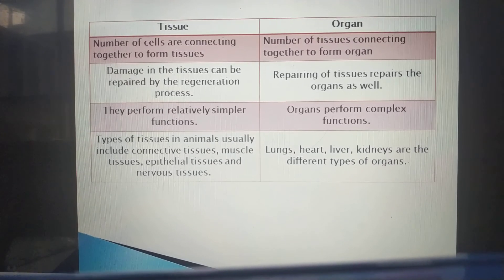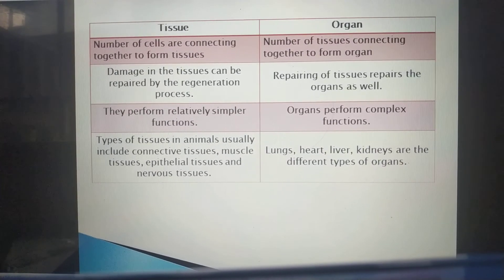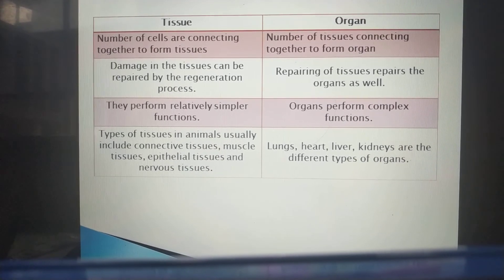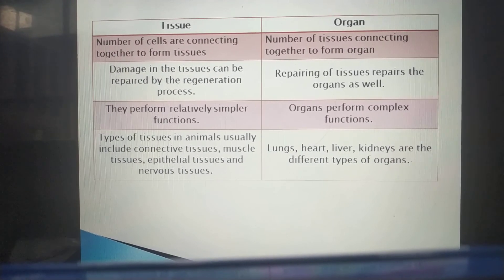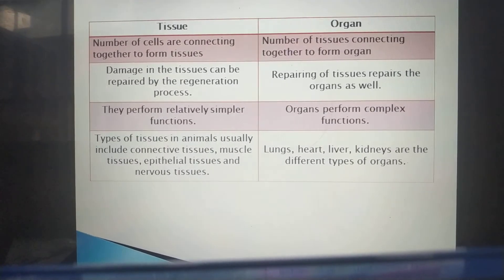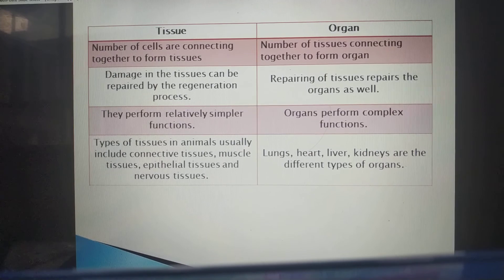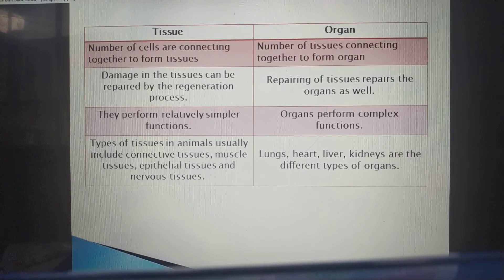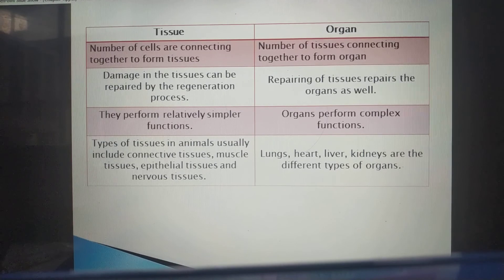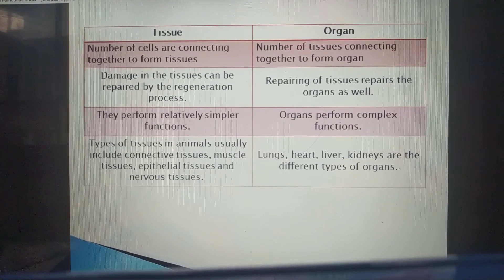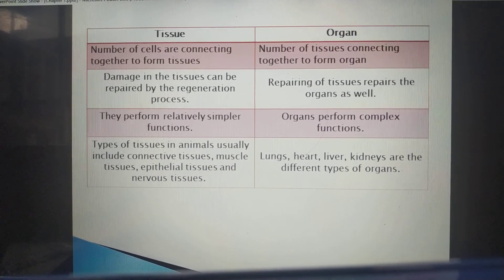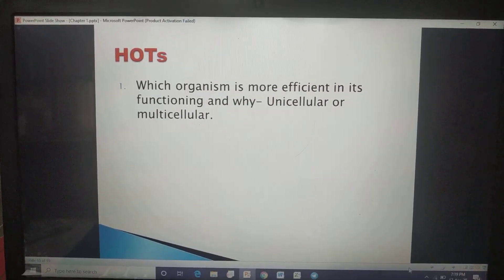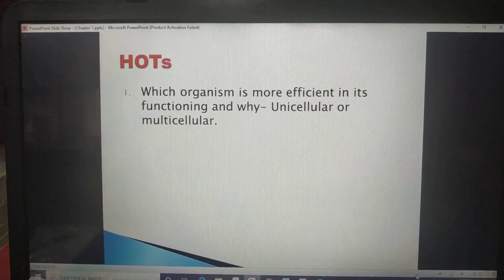You will study about epithelial tissues later. Connective tissues are tissues which establish connection with one another — they hold their endpoints together like a chain. Muscle tissues are present in our muscles, and nervous tissues are present in our nervous system.